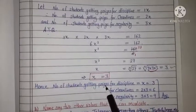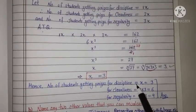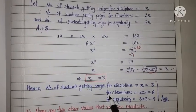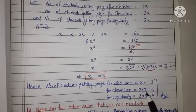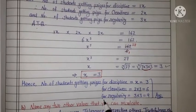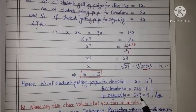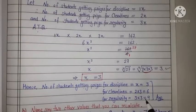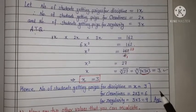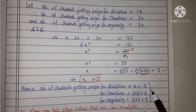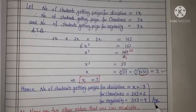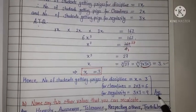Hence, number of students getting prizes for discipline is equal to x, aur x ki value hamare paas bani hai 3. And for cleanliness, that is equal to 2x thi, x ki value 3 put karenge, that is equal to 6. And for regularity, 3x thi hamare paas, x ki value 3 put karenge, so that is equal to 9. So 3 values ke liye hamare paas jo awards diye gaye number of students ko, woh banenge number of students 3, 6 and 9. That is our required answer.